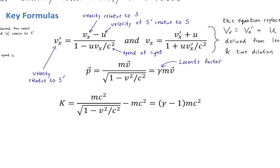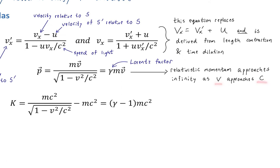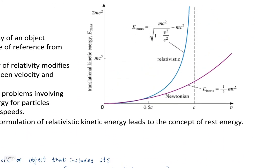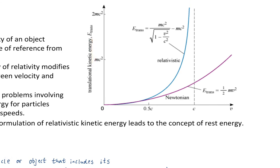Relativistic momentum approaches infinity as V approaches C. The momentum never actually allows particles to move faster than C. The beauty of this equation — by having the Lorentz factor — is that gamma approaches infinity as velocity goes to C. If gamma is going to infinity and you're multiplying MV by that Lorentz factor, then momentum goes to infinity as well. It's similar to the kinetic energy graph: it's not just kinetic energy that approaches infinity, but also momentum.